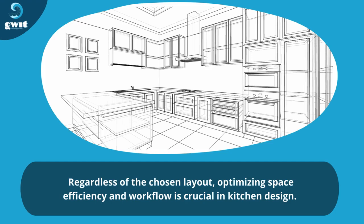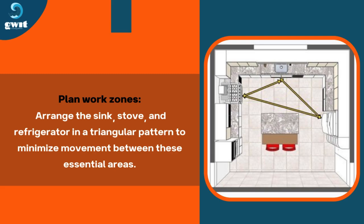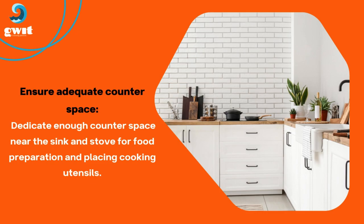Regardless of the chosen layout, optimizing space efficiency and workflow is crucial in kitchen design. Here are some general tips to enhance efficiency. Plan work zones by arranging the sink, stove, and refrigerator in a triangular pattern to minimize movement between these essential areas. Ensure adequate counter space by dedicating enough space near the sink and stove for food preparation and placing cooking utensils.